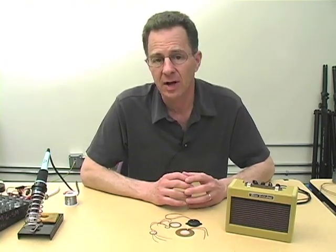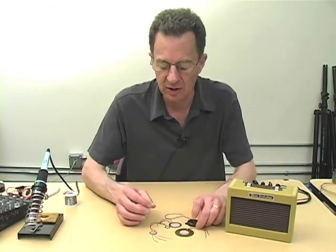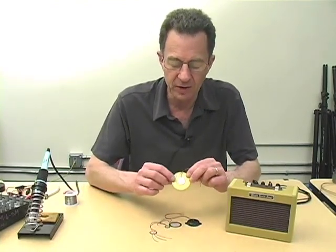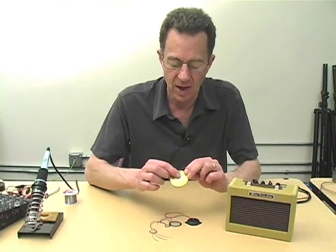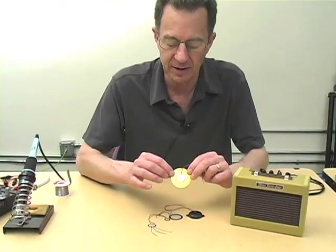The easiest way to make a contact mic is to use what is called a piezo disc. A piezo disc is a small disc of brass with a crystal material deposited on it and a little bullseye in the middle.